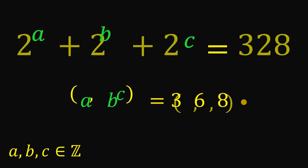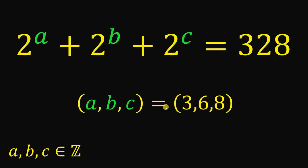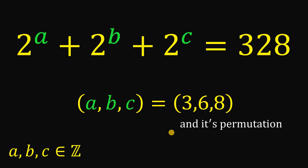Therefore, we get the values of A, B, and C, which are 3, 6, and 8, respectively. Our answer to this question must be equal to 3, 6, and 8, and of course their permutations — so it can also be 6, 3, 8 or 8, 6, 3 or 3, 8, 6, and so on and so forth.